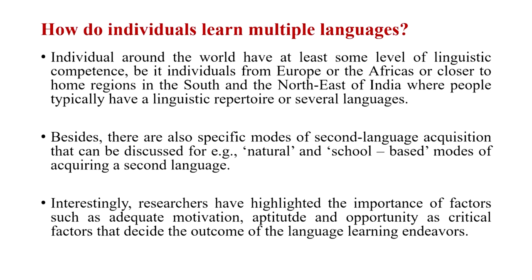Researchers have highlighted the importance of factors such as adequate motivation when older-age people pick up a language. Aptitude is a very important variable — some people can very easily speak 4, 5, or 6 languages; I once met a taxi driver in Shillong who said he spoke 13 languages. Some people cannot pick up a second or third language even with sincere effort. Opportunity is also key: how many languages are you exposed to on a daily basis, can you pick them up nonchalantly, and is there a professional incentive to learning?